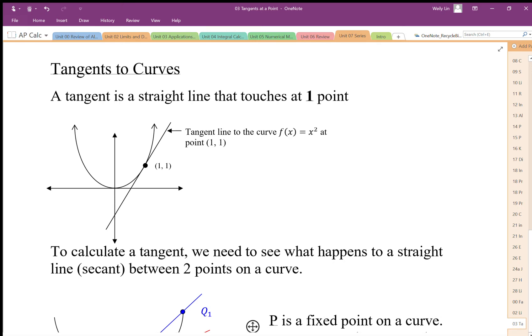A tangent line is a line that just touches a curve at a point. Here we have a parabola, y equals x squared, and there's a straight line that just touches right at that point, so it's tangent to that point (1,1). So how do we find the slope of that line?